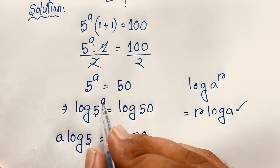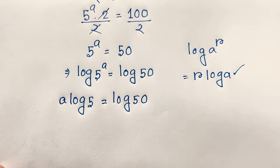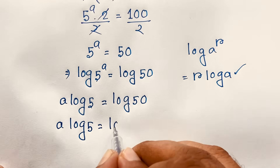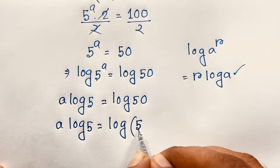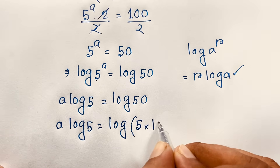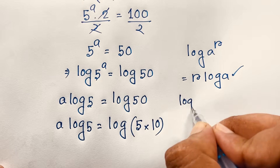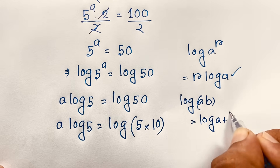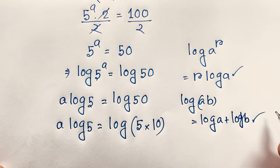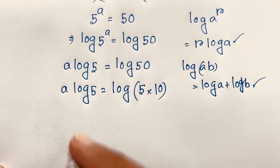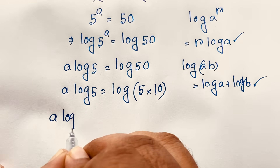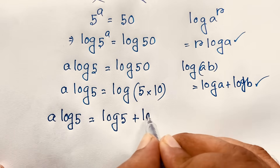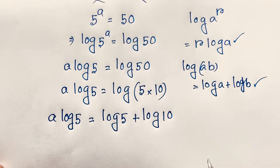Applying this math formula here, it will be a times log 5 is equal to log 50. Now log 50 can be written as log of 5 times 10. We know that log(a × b) equals log a plus log b, so applying this math formula here gives us the next step.